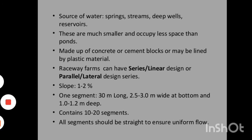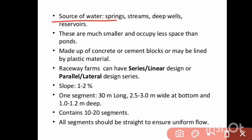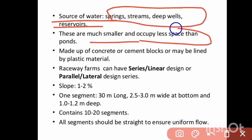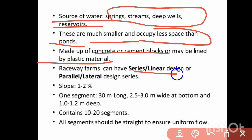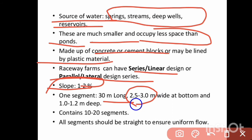Sources of water for raceways are springs, streams, deep wells, and reservoirs. Raceways are smaller and occupy less space than ponds, and can also be used in hilly areas for fish culture. They are made of concrete, cement blocks, or may be lined with plastic material. Raceway forms can be series, linear, parallel, and lateral design. Slope should be 1 to 2%. One segment should be 30 metres long and 2.5 to 3 metres wide at the bottom and 1 to 1.5 metres deep. They contain 10 to 20 segments, and all segments should be straight to ensure uniform flow.